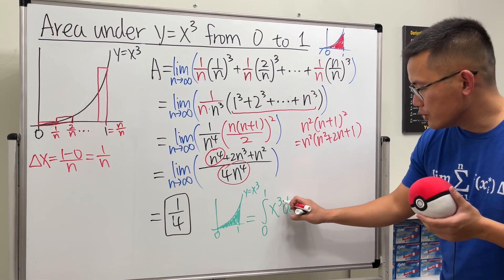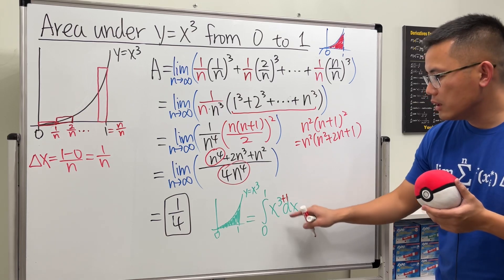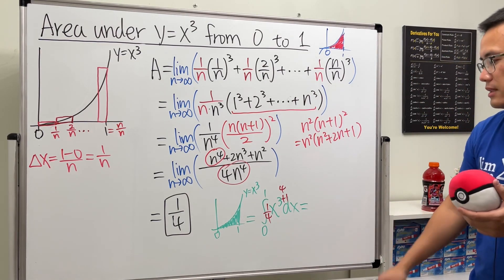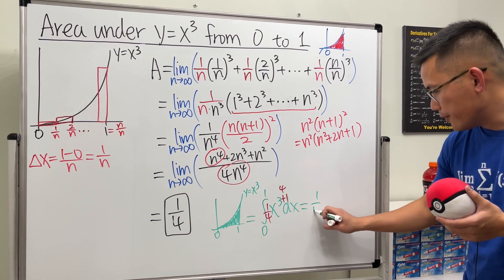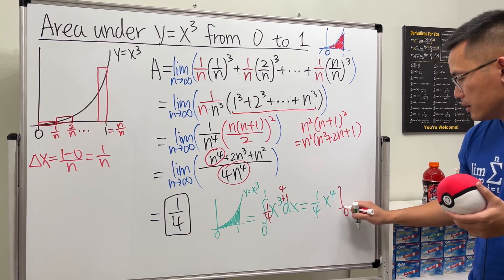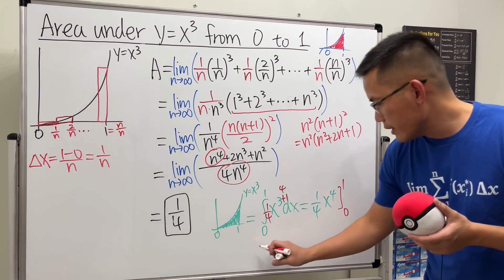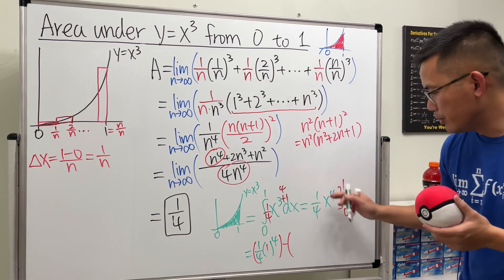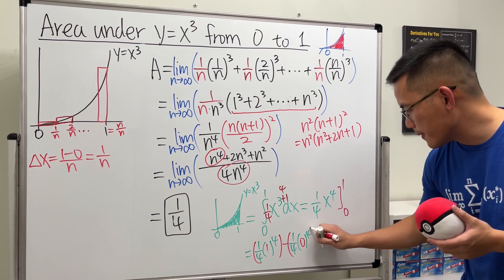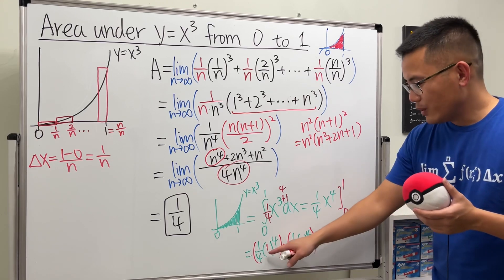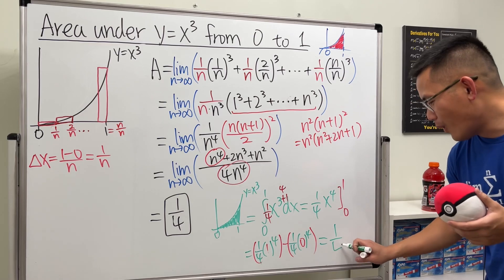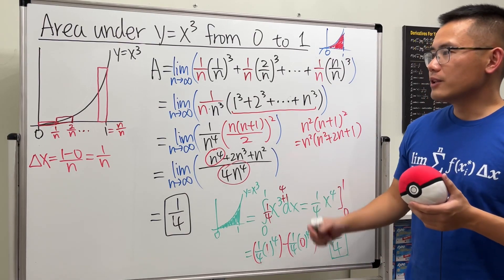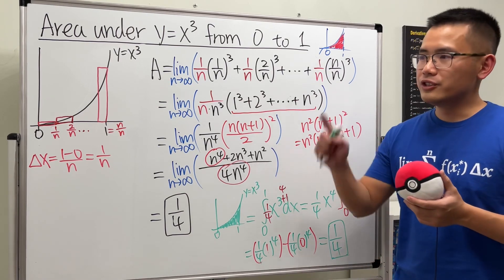To compute this, we use the Fundamental Theorem of Calculus Part 2: find the antiderivative first. Using the reverse power rule, 3 + 1 = 4, divided by the new power, gives (1/4)x⁴. We don't need the plus constant. Evaluating from 0 to 1: plug in 1 first — (1/4)(1⁴) = 1/4 — then minus (1/4)(0⁴) = 0. So the answer is 1/4. The same answer, because it's the same area.